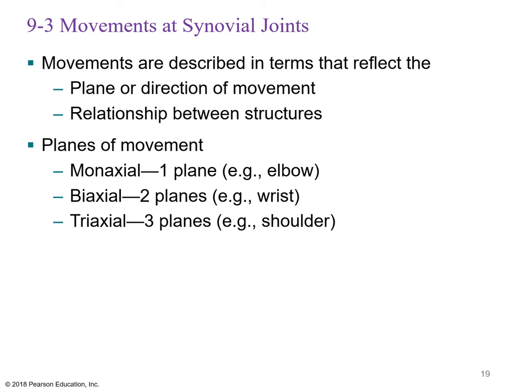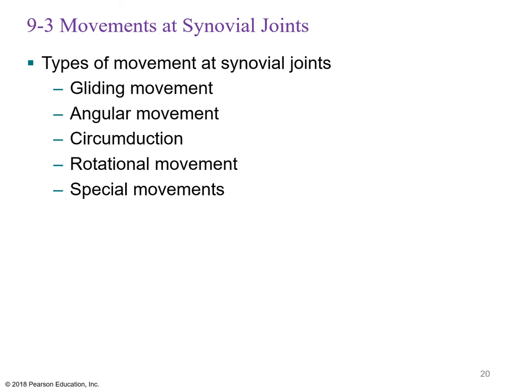Movements are described in terms of the plane or direction of movement. Synovial joints can move in one plane — monaxial, like the elbow — two planes, biaxial, like the wrist with flexion, extension, abduction, and adduction — or three planes, triaxial, like the shoulder, the most freely movable joint. Types of movement include gliding, angular movement, and circumduction — a combination of flexion, extension, lateral flexion, and rotation.